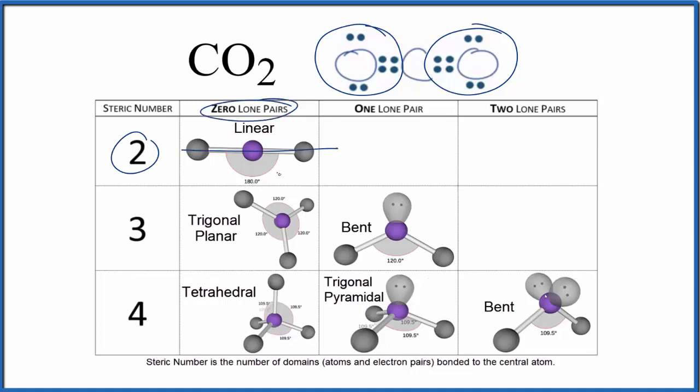Bond angle is 180 degrees. Essentially, these two oxygen atoms attached to the carbon are pushing away from each other, and they end up on opposite sides to give us this linear molecular geometry.